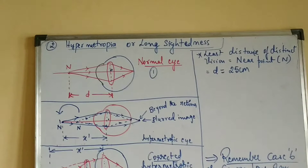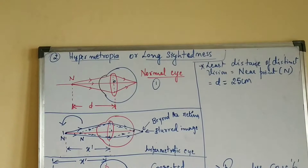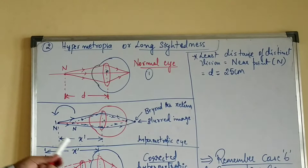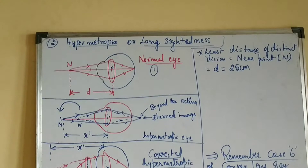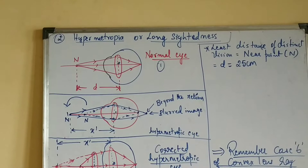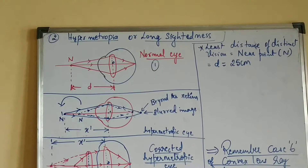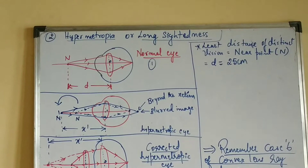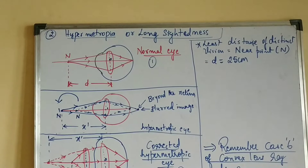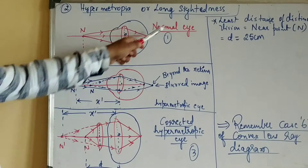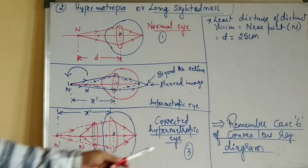Now let us move on to hypermetropia or long-sightedness. It is a defect of the human eye in which the person is not able to see objects which are very close by, but can see things at far distances. In myopia we focused on the far point; in hypermetropia we concentrate on the near point. There are three cases: normal eye, hypermetropic eye, and how to correct the hypermetropic eye.